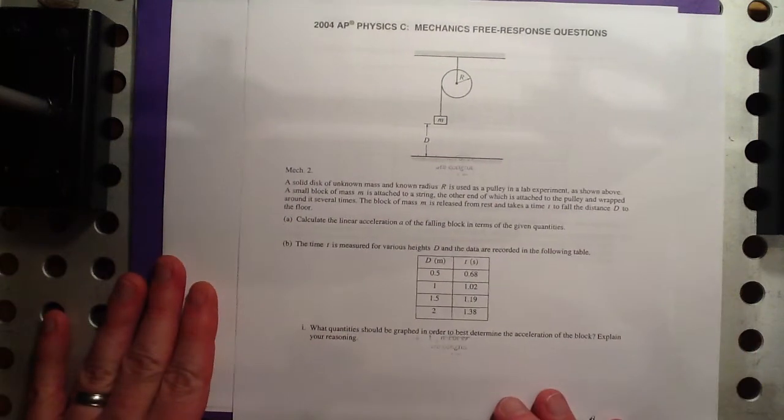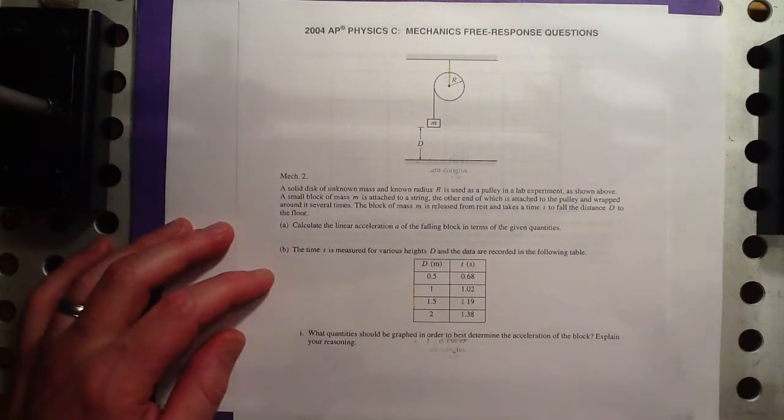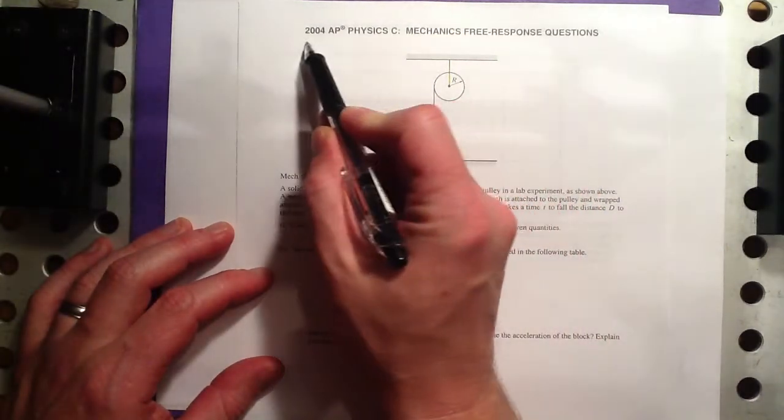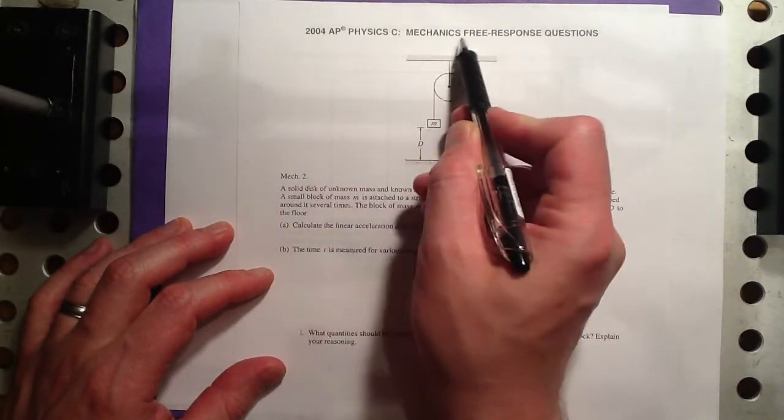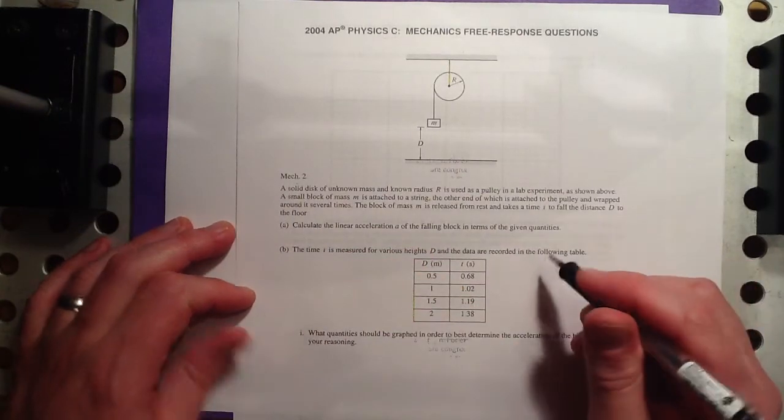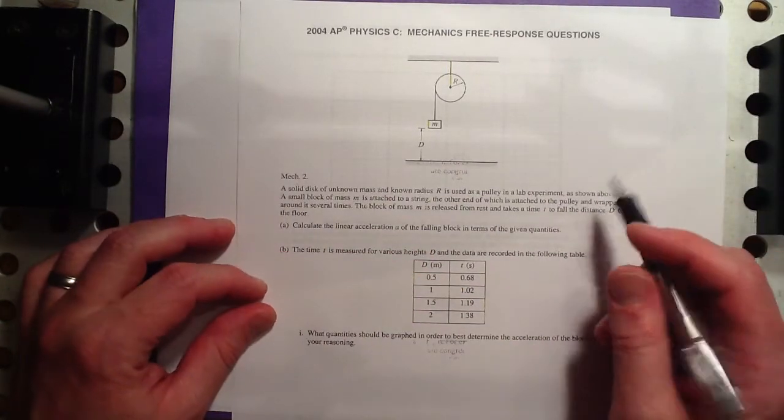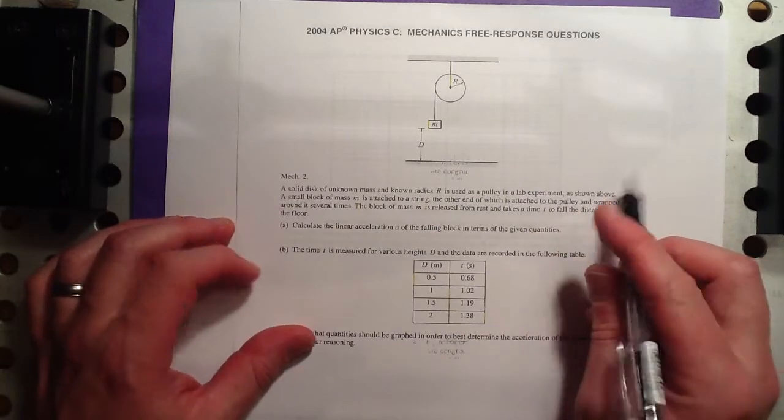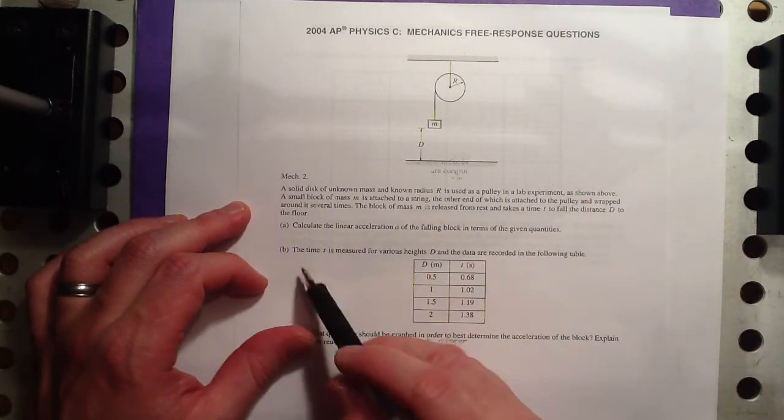This video contains the solutions for 2004 AP Physics C Mechanics number two. If you remember, this is the one that the average score I think was 5 out of 15. Pretty shabby, if you ask me.